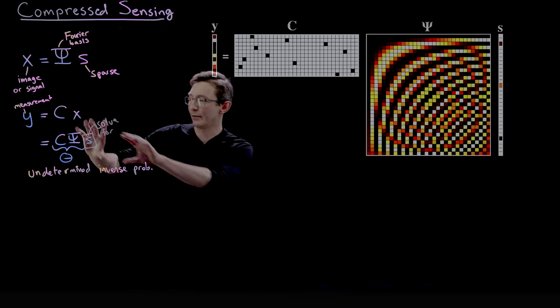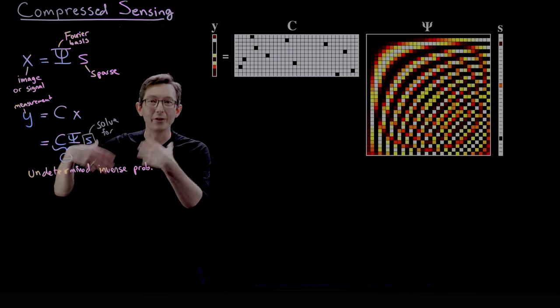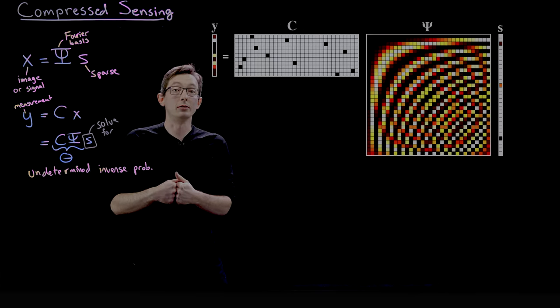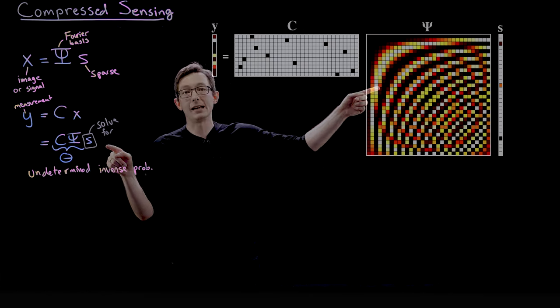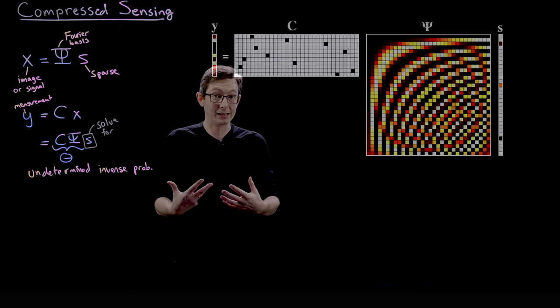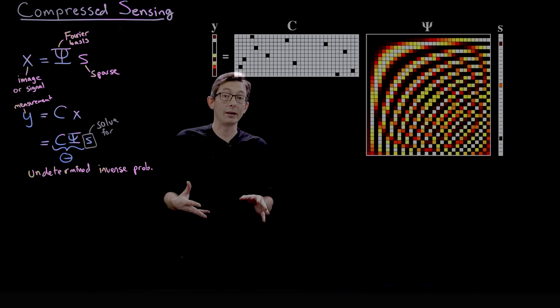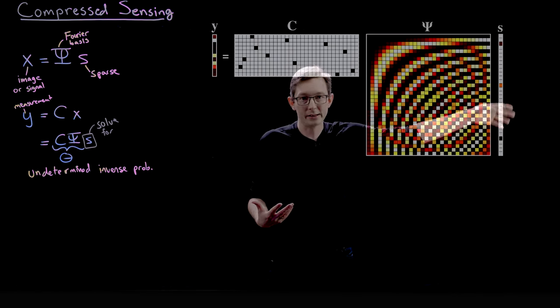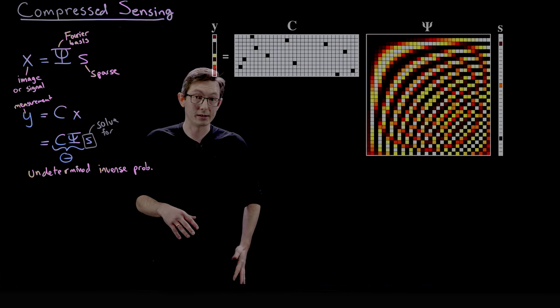Now, if you had written down this math problem, you could have written this down 100 years ago and people would understand basically what you're trying to do, but you wouldn't have been able to solve for this s. Finding the very particular s that satisfies this equations that happens to be the sparsest s in your Fourier basis, people wouldn't have been able to solve that problem. It's called a combinatorially hard problem. You'd literally have to try all combinations of entries to try to find the sparsest s that satisfies this system of equations.